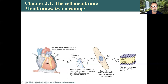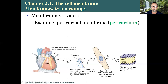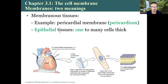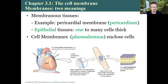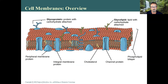Chapter three is about movement across membranes. When we talk about membranous tissues, we mean something you see with the unaided eye — a tissue you peel away. A good example is the pericardial membrane or pericardium. Epithelial tissues are one to many cells thick. The other meaning of membrane is the cell membrane, also called the plasma membrane, which encloses individual cells.